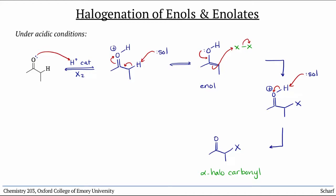It's important to note that ketones may have two possible alpha positions to halogenate. This reaction selectively halogenates the more substituted alpha position because that reaction pathway proceeds through the more substituted, and therefore more stable, enol intermediate.